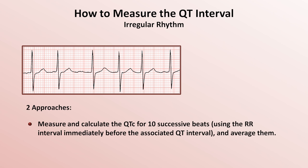Moving on from congenital long QT syndrome, medications are another important etiology. A huge number of meds have been implicated. However, absolute and comparative risks between implicated drugs within the same class are generally not known. Many studies comparing drug risks are produced by drug companies and not published in peer-reviewed journals. Also, they almost all look at the degree of QT prolongation rather than risk of torsade, which is the more relevant endpoint. Amiodarone, an antiarrhythmic, is the classic example — it very commonly causes QT prolongation, but is only uncommonly associated with torsade.